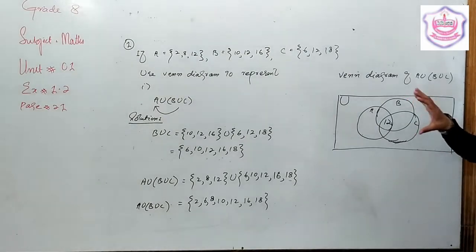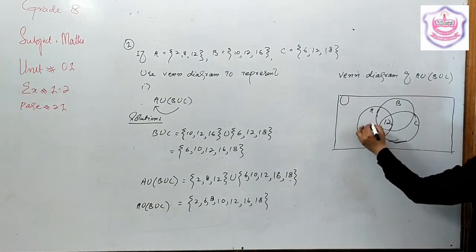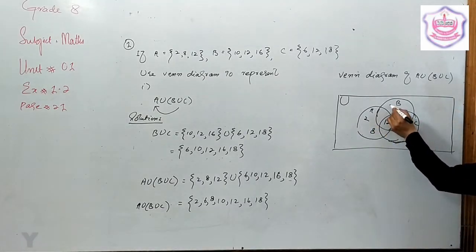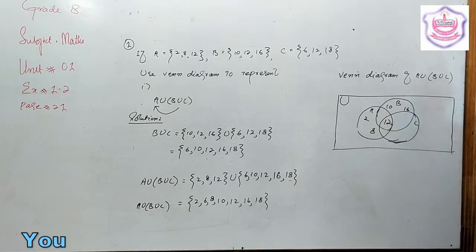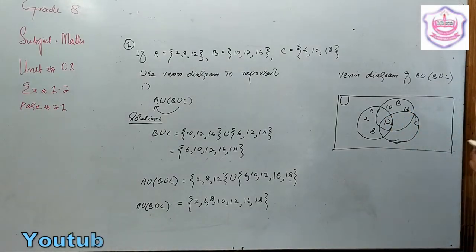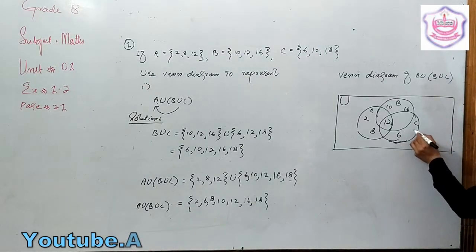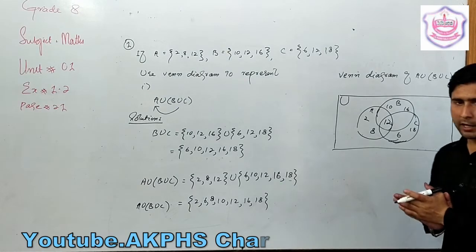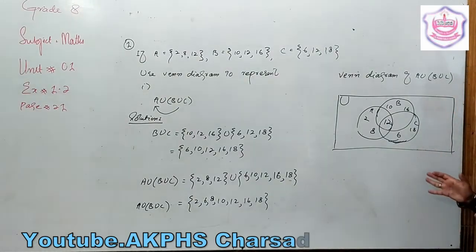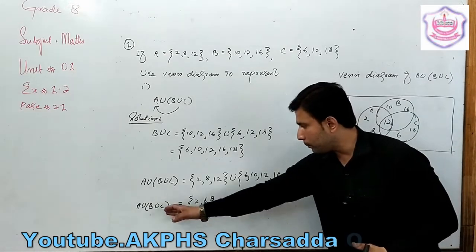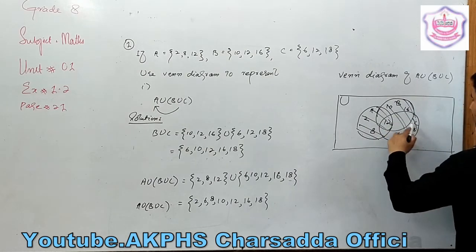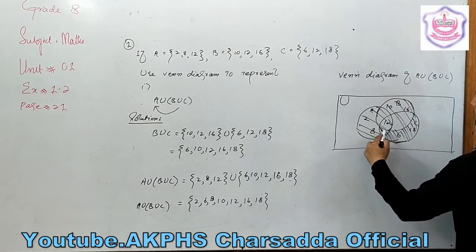The result of A union B union C contains elements: 2 and 8 (only in A), 10 and 16 (only in B), 6 and 18 (only in C), and 12 which is shared by all three sets. All three sets combined give the full union result. The entire Venn diagram region is shaded for the union.